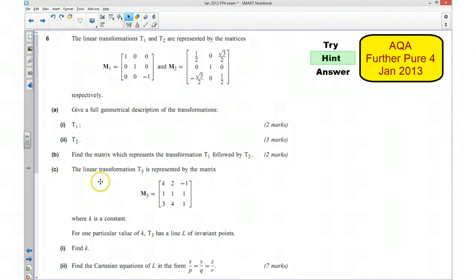Part C: the linear transformation is represented by this matrix M sub 3. For one particular value of k, this transformation has a line of invariant points. So what we're looking for is when I multiply a matrix by a point, which we can call x, y, z, the answer I get is still x, y, z. So if you write that down as an equation and expand that, hopefully you'll be able to find which value of k that works for. Once you've got that, we should be able to write it in this form over here.